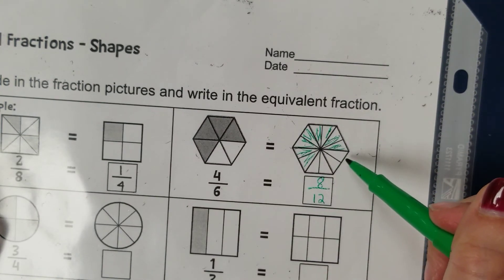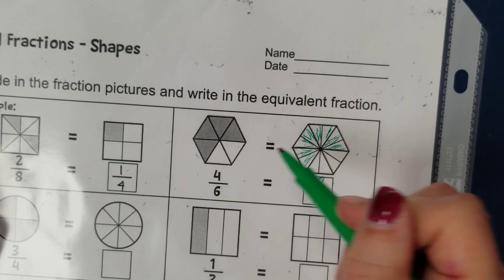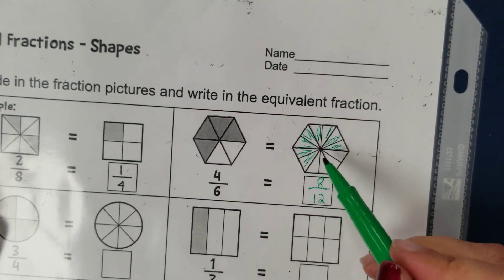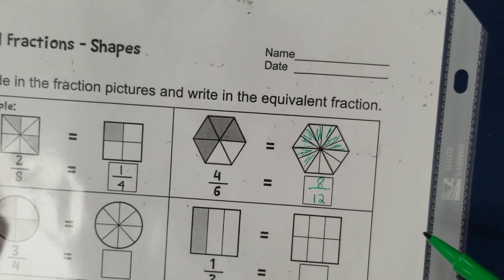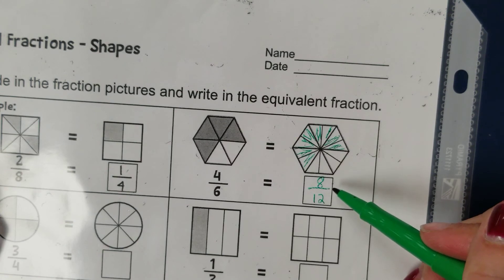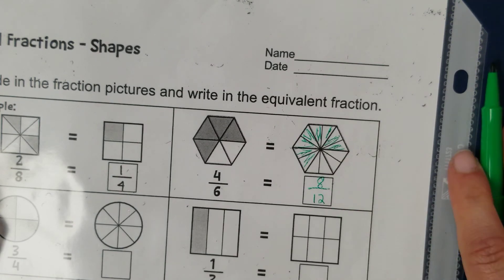So it's the same figure divided up into different numbers of equal parts but when we shade the same amount of the figures we get equivalent fractions. So four sixths is equivalent or equal to eight twelfths.